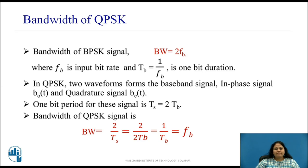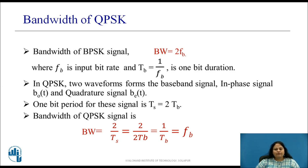Let us now derive the expression for bandwidth of the QPSK signal. The bandwidth of a BPSK signal is given by BW = 2FB, where FB is the input bit rate and TB = 1/FB is the bit duration. In QPSK, the two waveforms — in-phase signal BO(t) and quadrature signal BE(t) — form the baseband signal, used to generate two BPSK signals. One symbol period for these signals is TS = 2TB. Thus, the bandwidth of the QPSK signal is BW = 2/TS = FB. We can see that the bandwidth of the QPSK signal is half of the bandwidth of the BPSK signal.